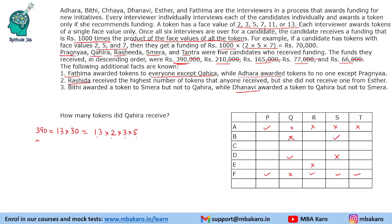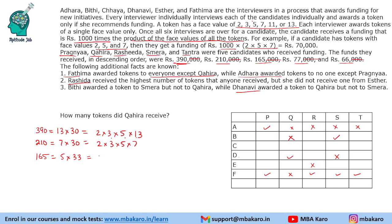210 = 7 × 30 = 2 × 3 × 5 × 7. Then 165 = 5 × 33 = 3 × 5 × 11. Then 77 = 7 × 11. And 66 = 6 × 11 = 2 × 3 × 11.